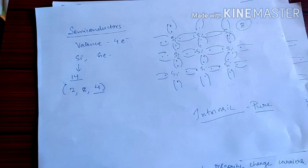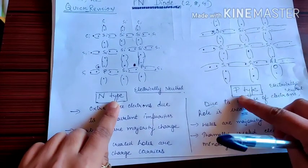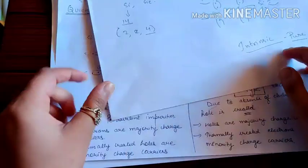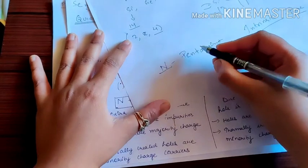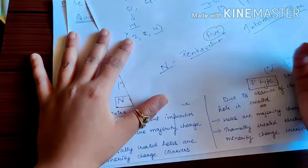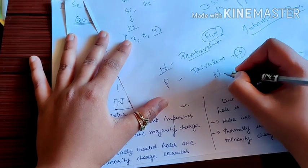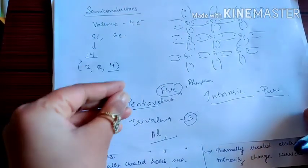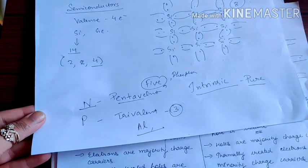Now, there are two types of semiconductors: one is intrinsic and one is extrinsic. Extrinsic is of two types — one is N-type and one is P-type. In N-type, pentavalent impurities are added. You can remember that N is for negative. In pentavalent we have 5 electrons, while silicon has 4. In P-type we have trivalent impurity added — trivalent means its valence shell has 3 electrons, like aluminum. And pentavalent's example is phosphorus.